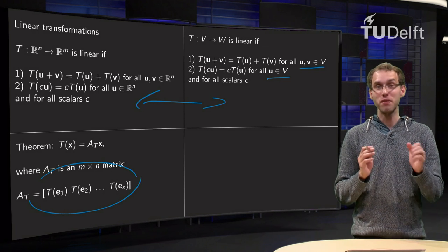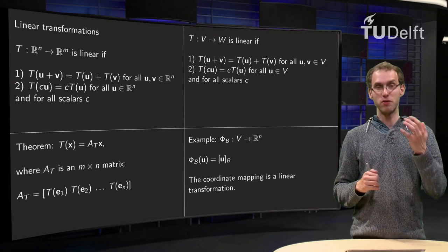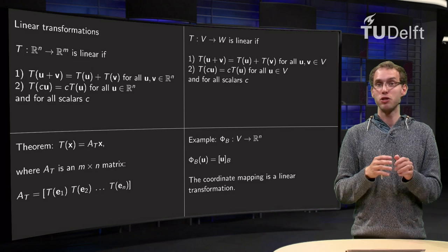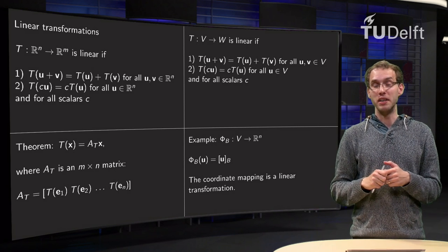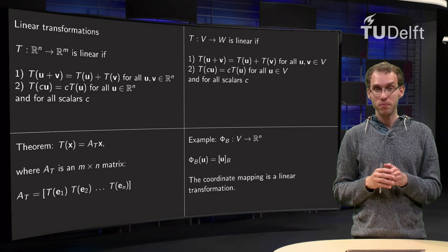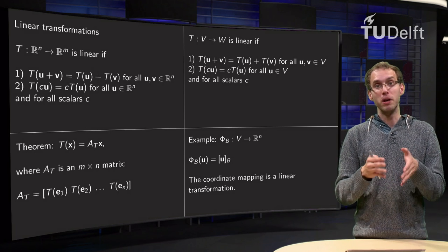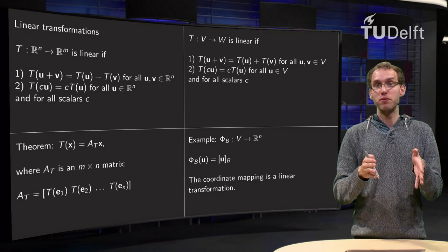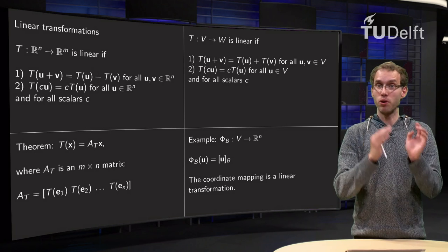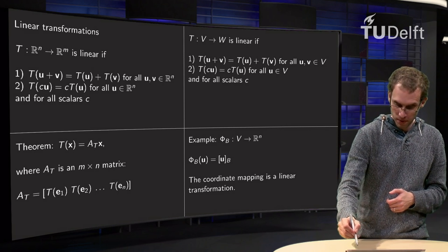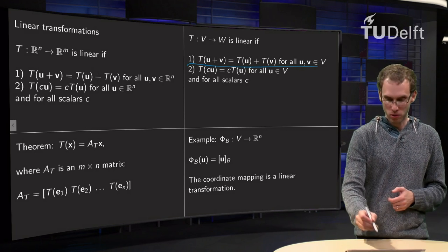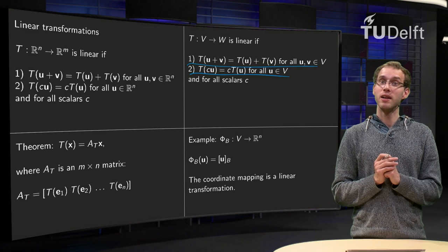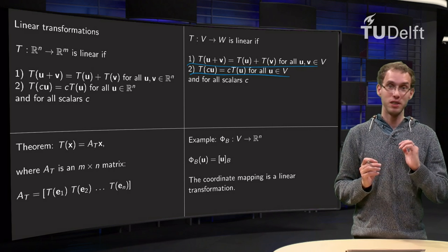Let us look at one very specific example of a very important linear transformation, our coordinate mapping, which we will call φ_B. What goes in is a vector in V, some polynomial or whatever, and what comes out is a vector in R^n, so here we choose W = R^n. We define φ_B as the coordinate vector of u. We know from previous examples that the coordinate vector of u + v equals the coordinate vector of u plus the coordinate vector of v, so this property is satisfied, and something similar holds for scalar multiplication. So we see that our coordinate mapping is already an example of a linear transformation, and there will be many more later on.